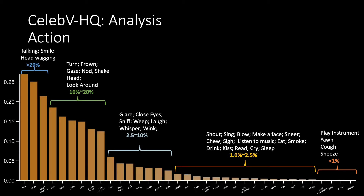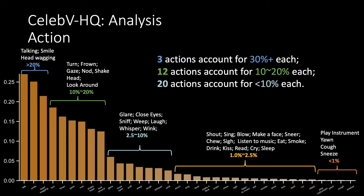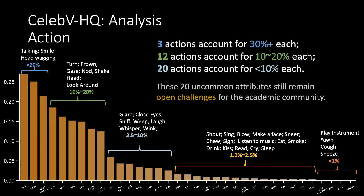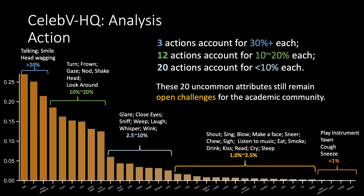There are diverse action attributes in CelebVHQ. Common actions such as talk, smile, and head-wagging account for over 20% each. About 20 uncommon actions account for less than 1% each. This result is in line with our expectation that these uncommon attributes remain open challenges for the academic community.